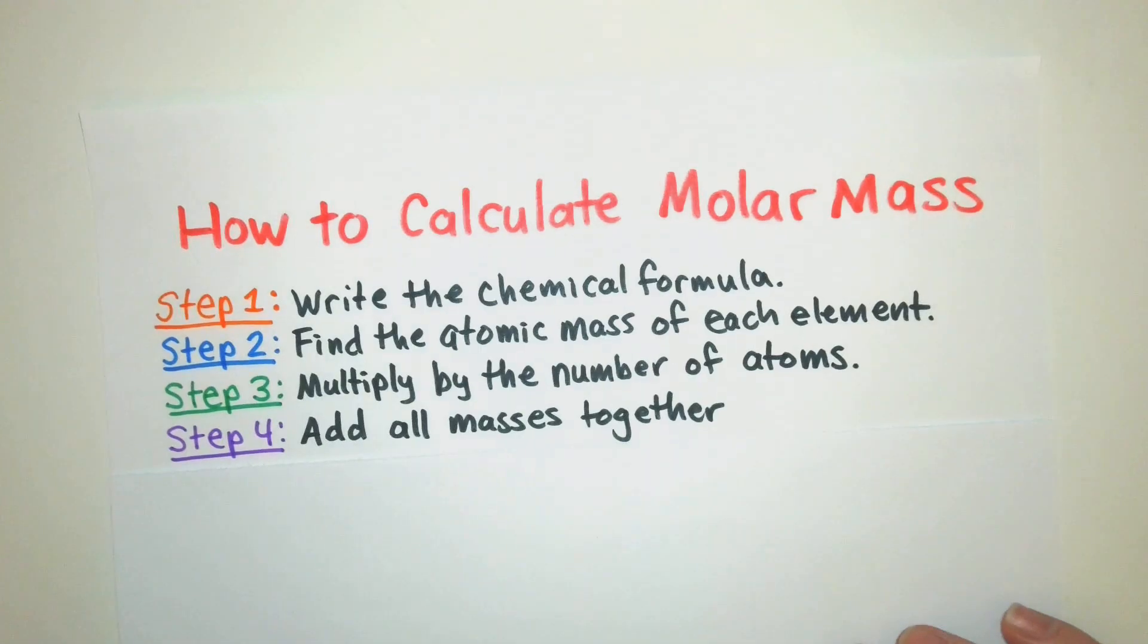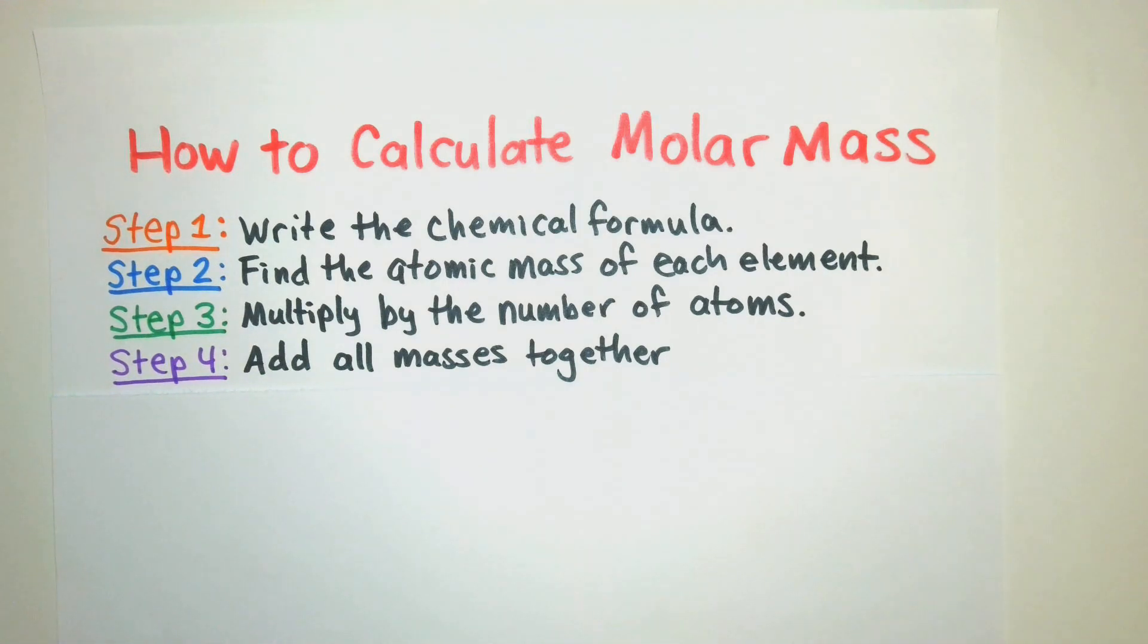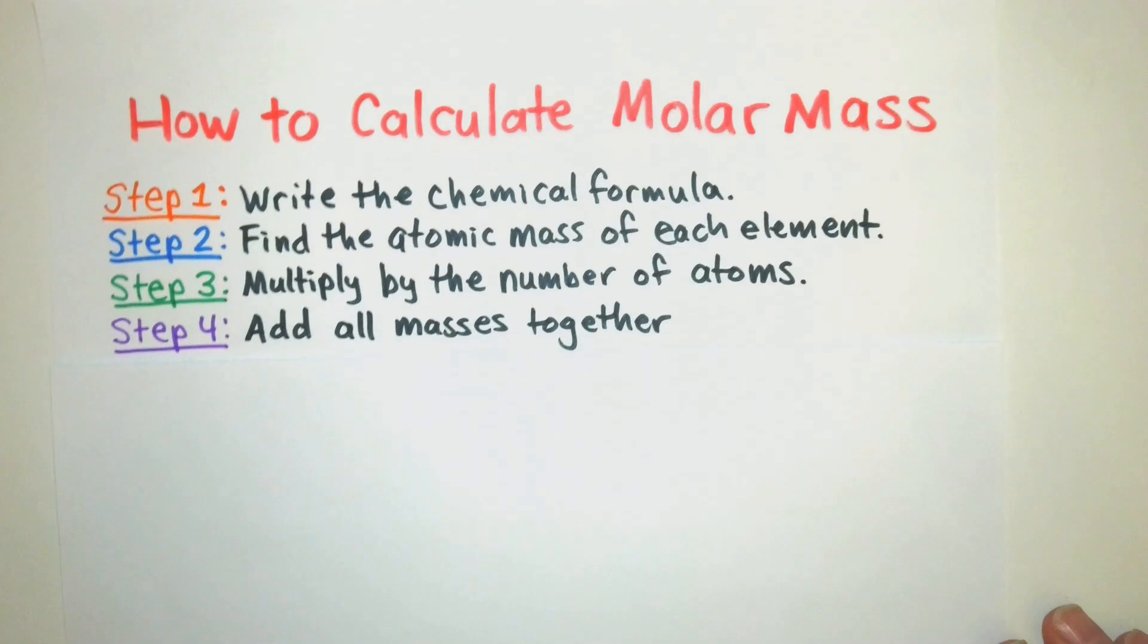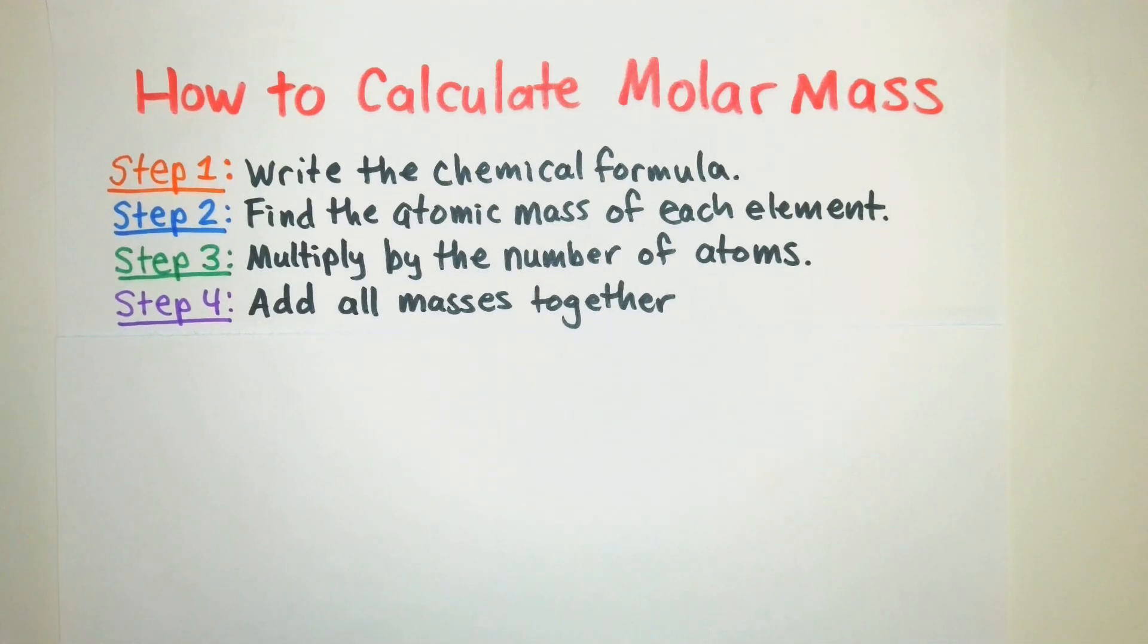So whenever I'm doing molar mass calculations, I like to follow these steps right here. Step one, I write the chemical formula. Step two, find the atomic mass of each element from the periodic table. Step three, multiply by the number of atoms in that chemical formula. And step four is add all the masses together.